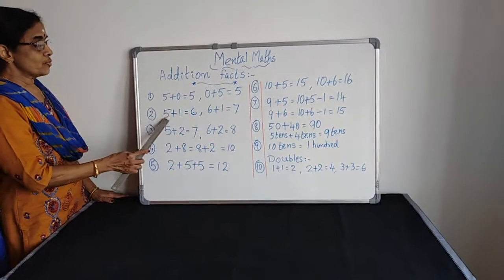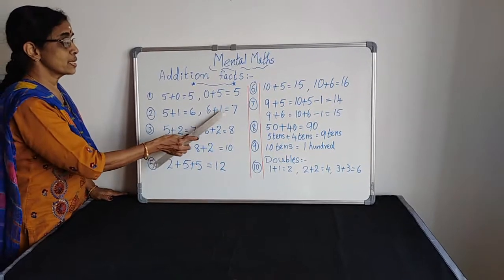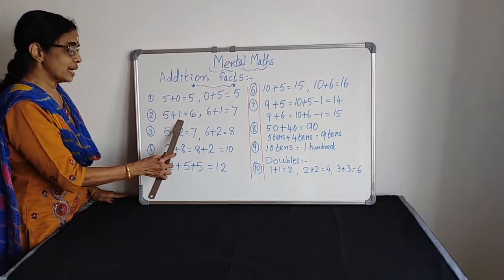Rule 2: 5 plus 1 equals 6, 6 plus 1 equals 7. When we are adding 1, we are getting the next number.